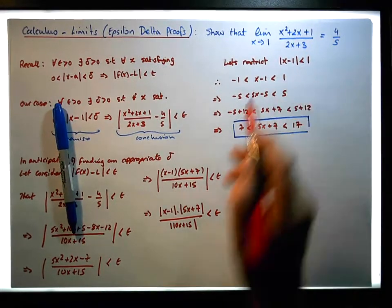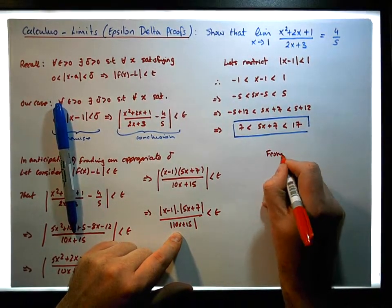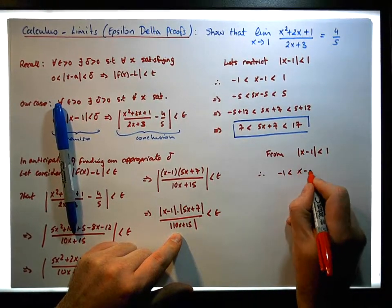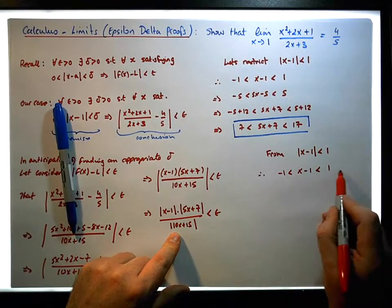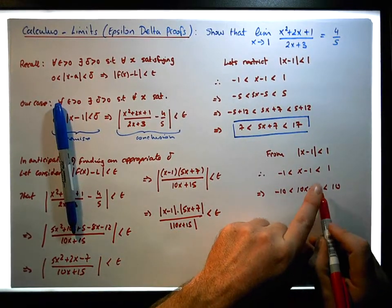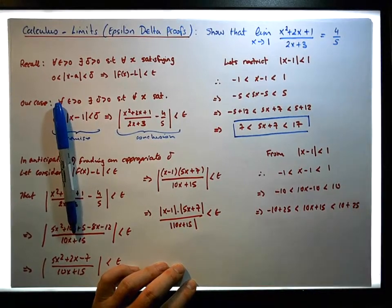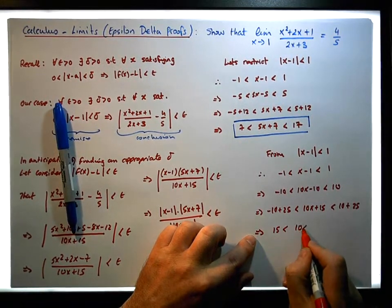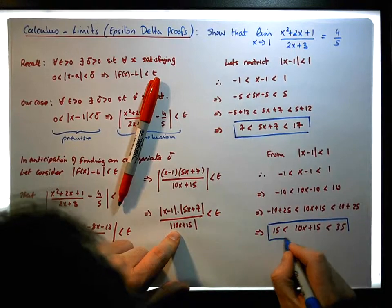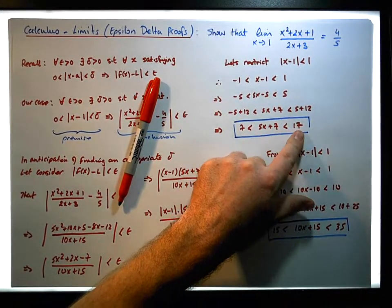Let's consider what happens to 10x plus 15. From the restriction that the absolute value of x minus 1 is less than 1, we have that minus 1 is less than x minus 1, which is less than 1. Multiplying across by 10, this implies minus 10 is less than 10x minus 10, which is less than 10. Adding 25, this implies that 15 is less than 10x plus 15, which is less than 45. So we've bounded 10x plus 15 above by 25 and below by 15. Similarly, we've bounded 5x plus 7 above by 17 and below by 7.